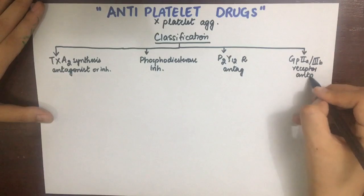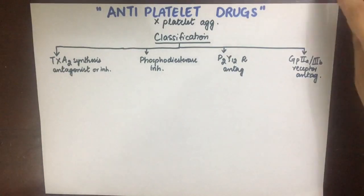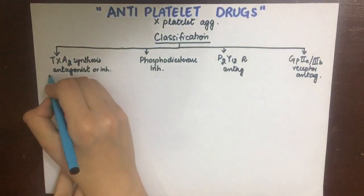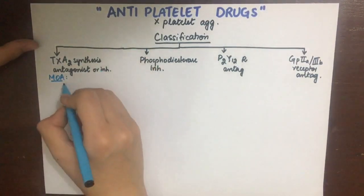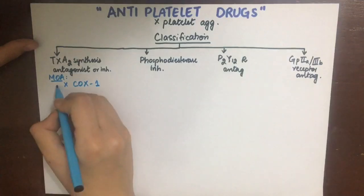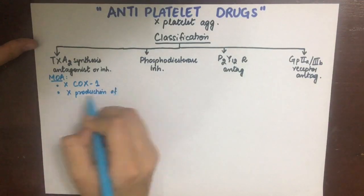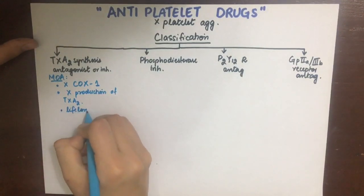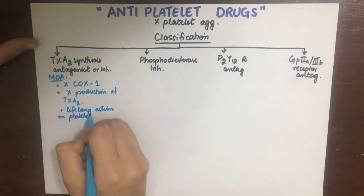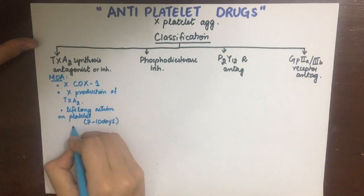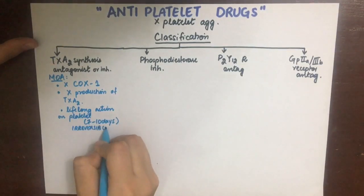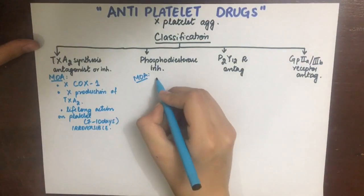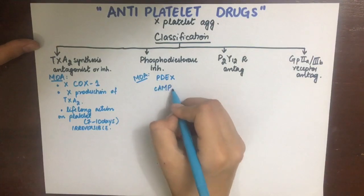Thromboxane A2 synthesis inhibition is achieved by irreversibly inhibiting the COX-1 enzyme, so the platelet cannot produce thromboxane A2, and thus thromboxane A2 cannot contribute to platelet aggregation. This action lasts for the lifetime of the platelet because the inhibition is irreversible and platelets have no nucleus, so no new enzymes can be synthesized. In their short life of seven to ten days, they die without producing thromboxane A2.